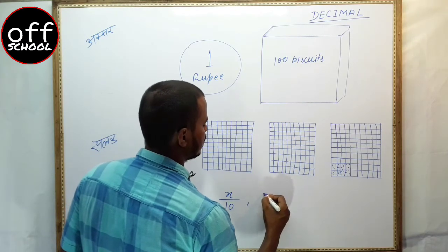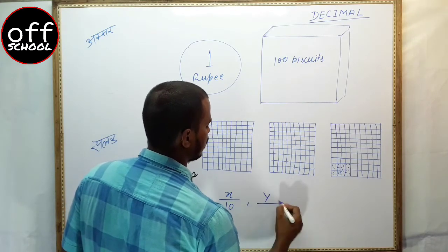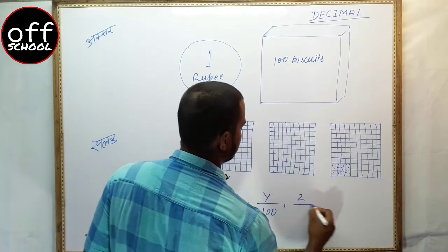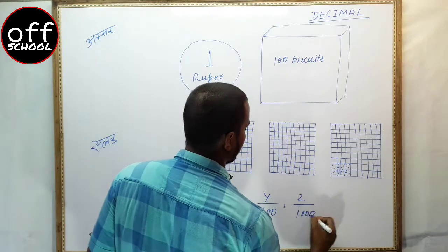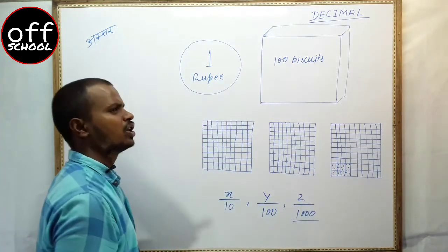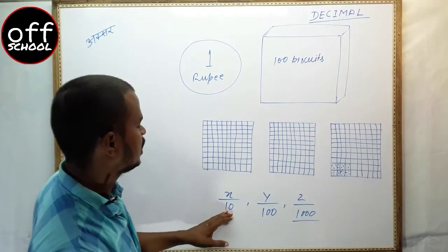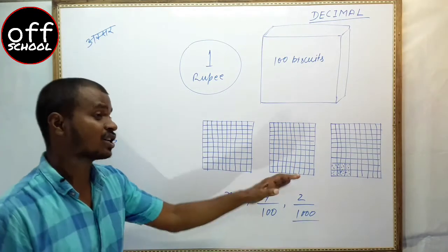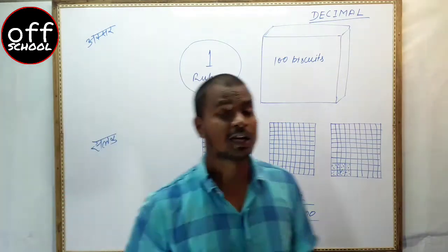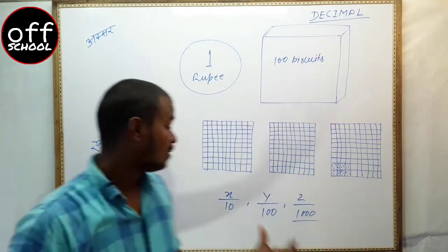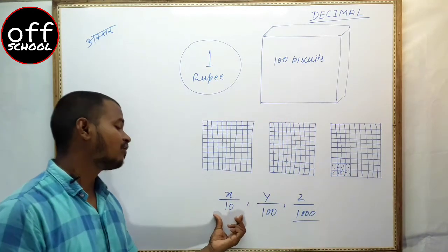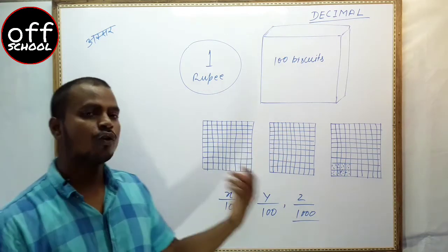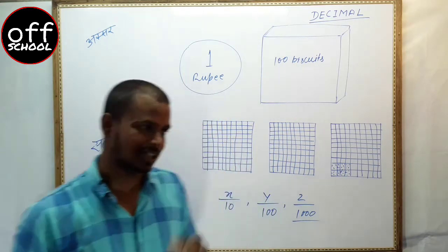Similarly, if there is an object y and you divide it into 100 parts, or z divided into 1000 parts — whenever you take a denominator, it is in the form of powers of 10. This method of representing a fraction is called decimal. That fractional form is the decimal's fractional form, and now we will learn how to convert that fractional form into decimal form.